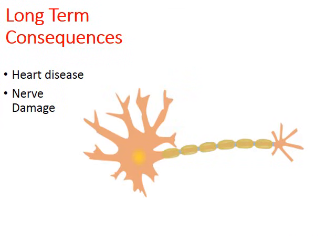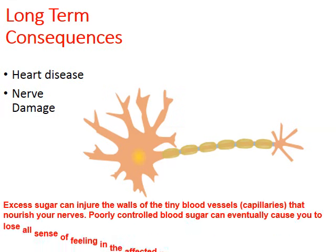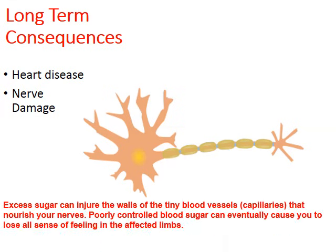Nerve damage is another long-term consequence. Excess sugar can injure the walls of the tiny blood vessels that nourish your nerves. Poorly controlled blood sugar can eventually cause you to lose all sense of feeling in the affected limbs.